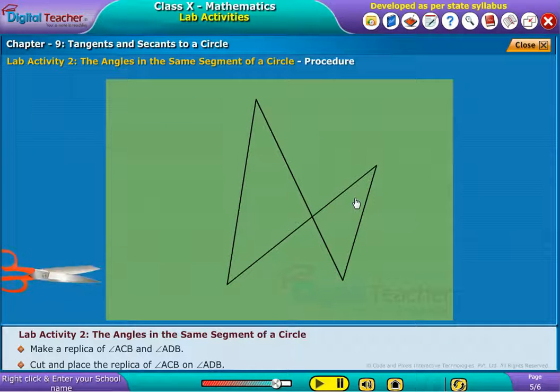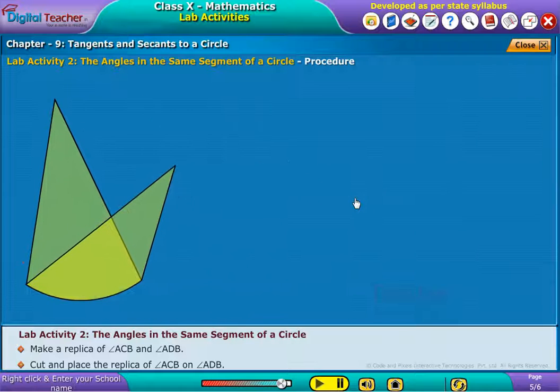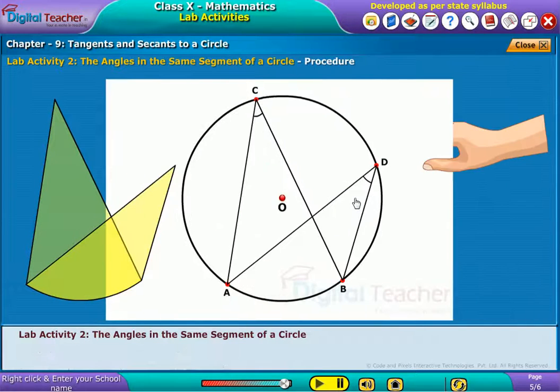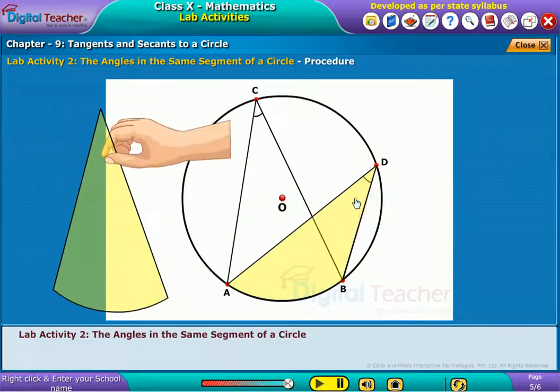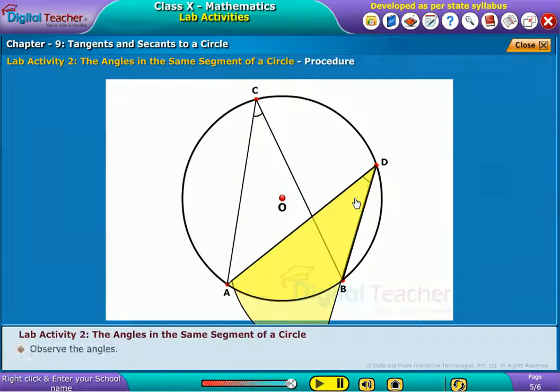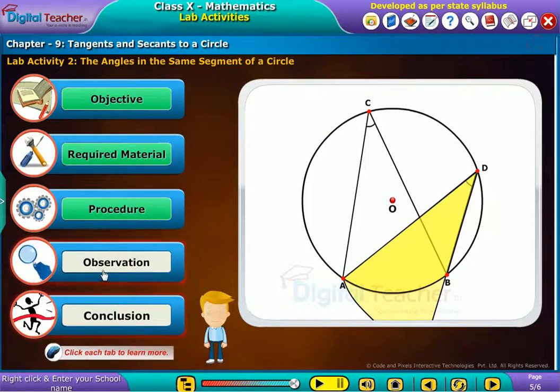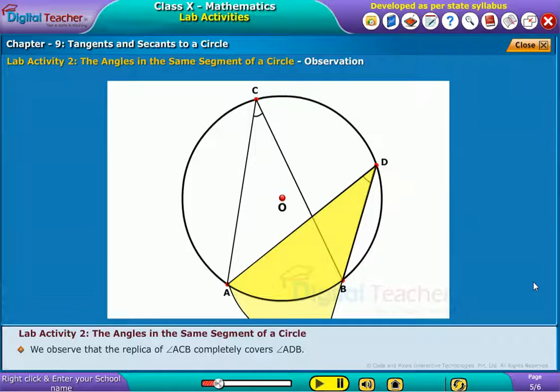Cut and place the replica of angle ACB on angle ADB. The replica of angle ACB completely covers angle ADB.